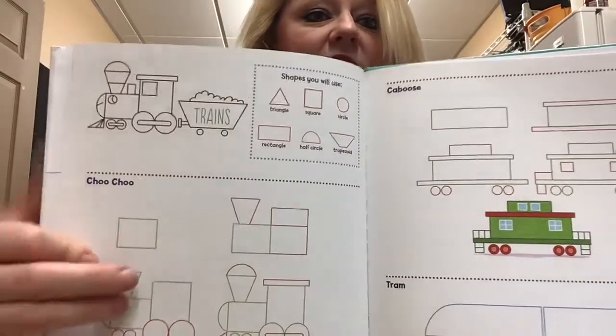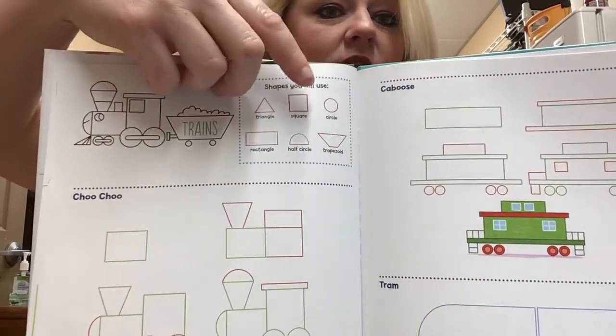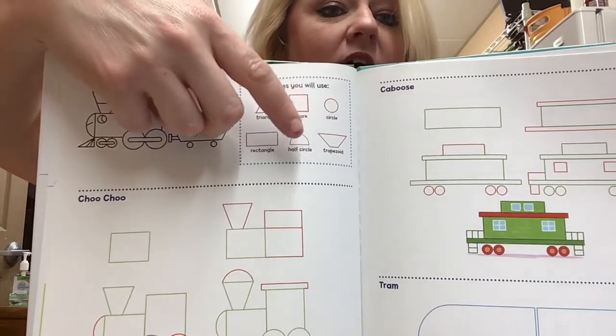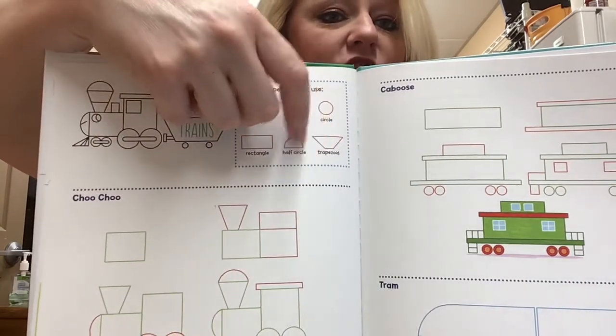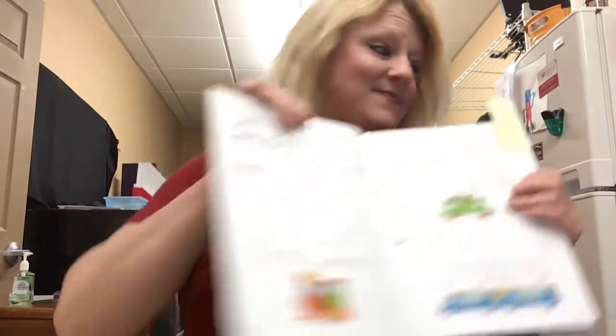So as you can see, we're going to be using these shapes. A triangle, a square, a circle, a rectangle, a half circle, and a trapezoid. And that's one of my favorites. Let's get started.